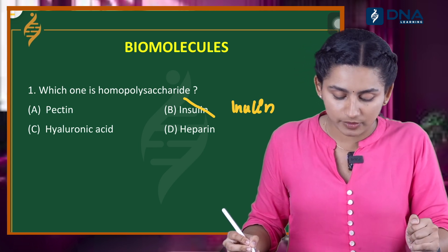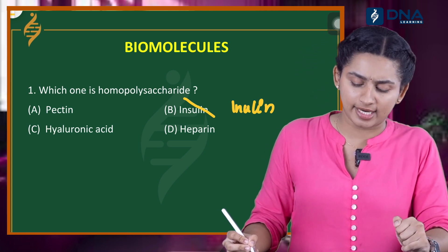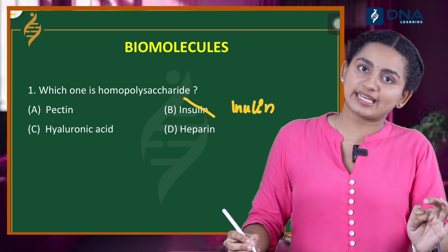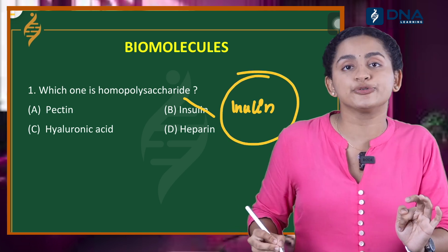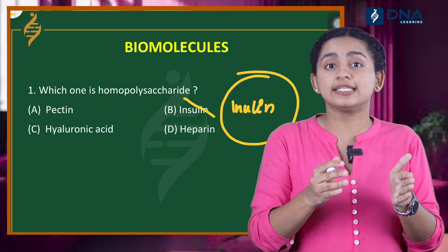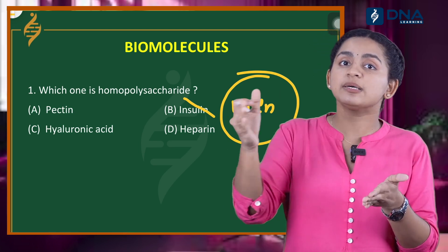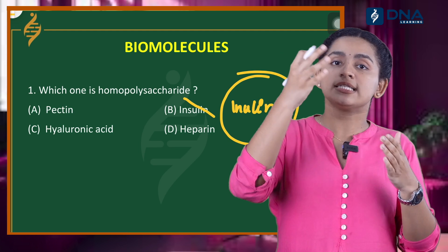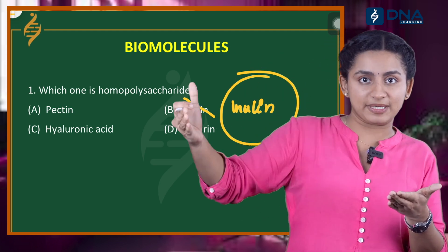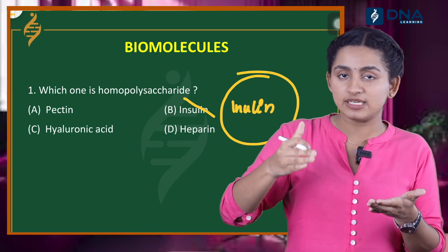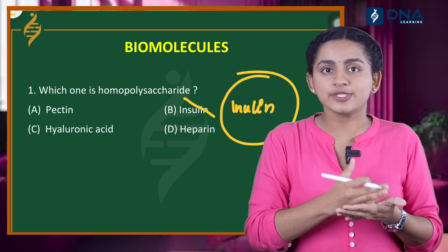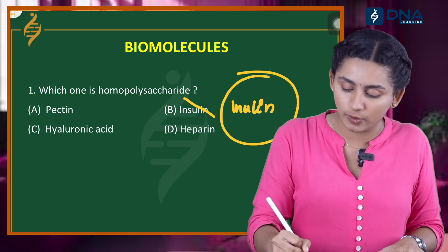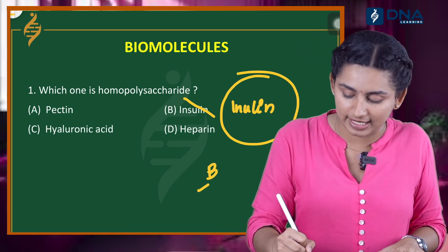Pectin is a heteropolysaccharide. Hyaluronic acid and heparin are mucopolysaccharides. Inulin is a homopolysaccharide — that is, fructose monomers repeated as the same unit. A homopolysaccharide means the same monomers are repeated. The monomer here is fructose. So the correct option is Option B, inulin.